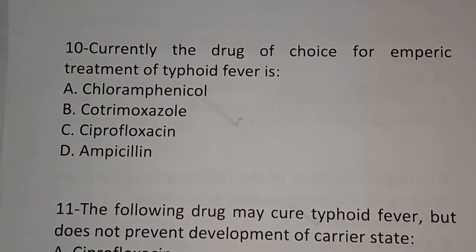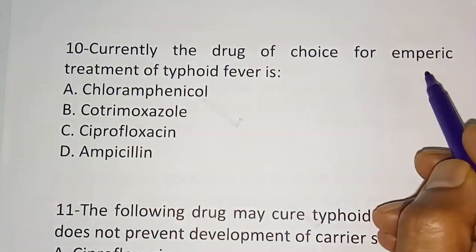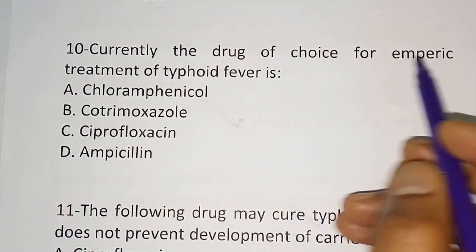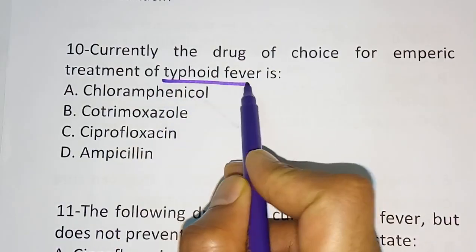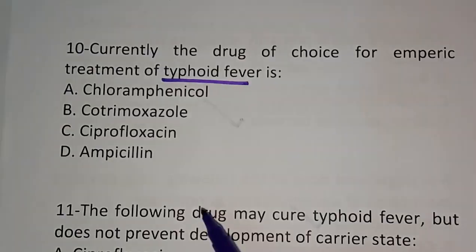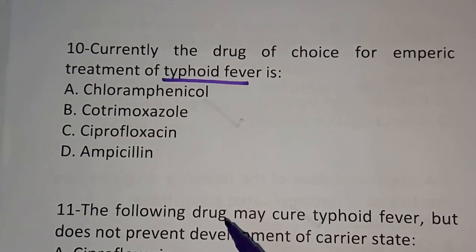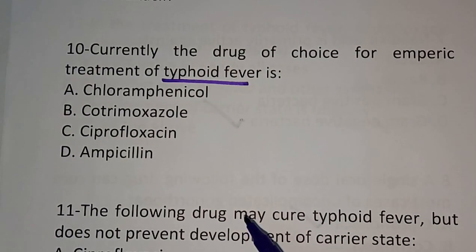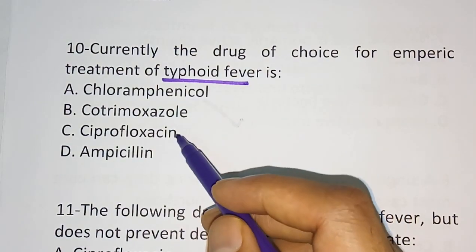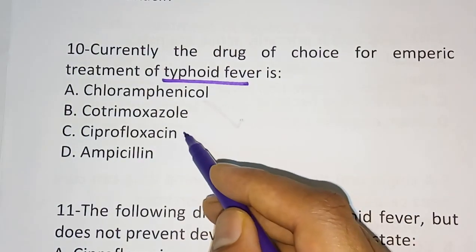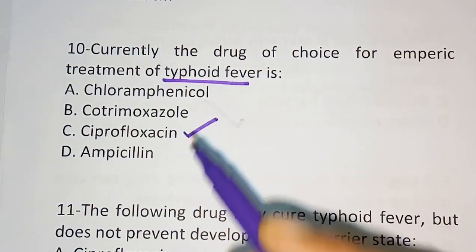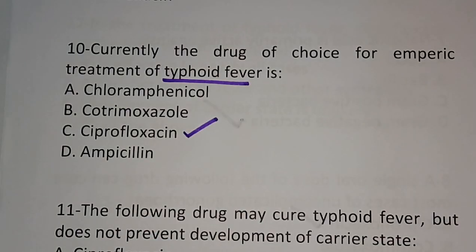Question ten: currently the drug of choice for treatment of typhoid fever. Options are: chloramphenicol, co-trimoxazole, ciprofloxacin, ampicillin. The correct answer is ciprofloxacin.